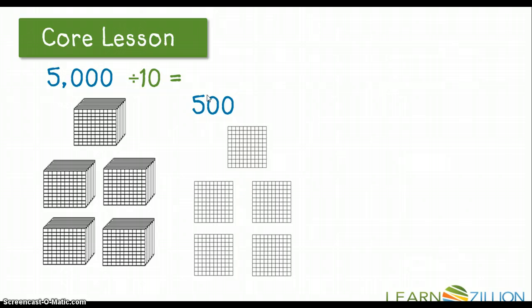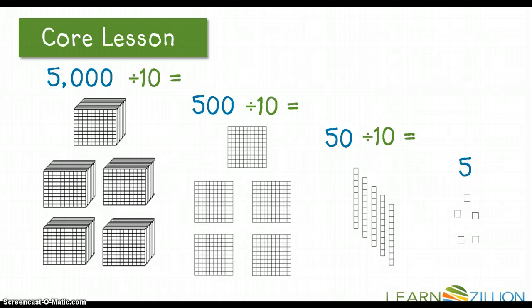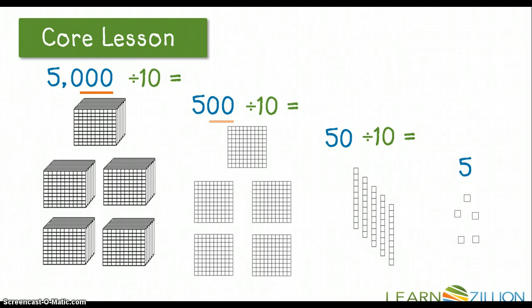If we wanted to divide 500 by 10 to make 500 10 times smaller, we would get 50. We take away one of the zeros on the end of 500 and our number becomes 50. If we then divide 50 by 10 to make it 10 times smaller, we get 5. We took away that last zero and our number became 5. So we took away one zero each time until we were left with none.